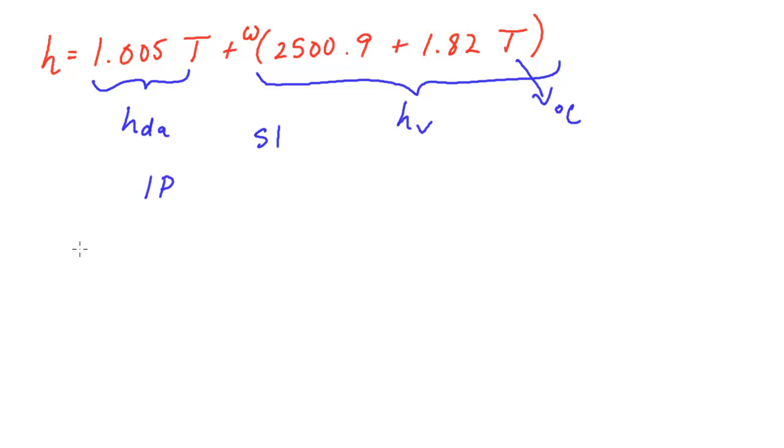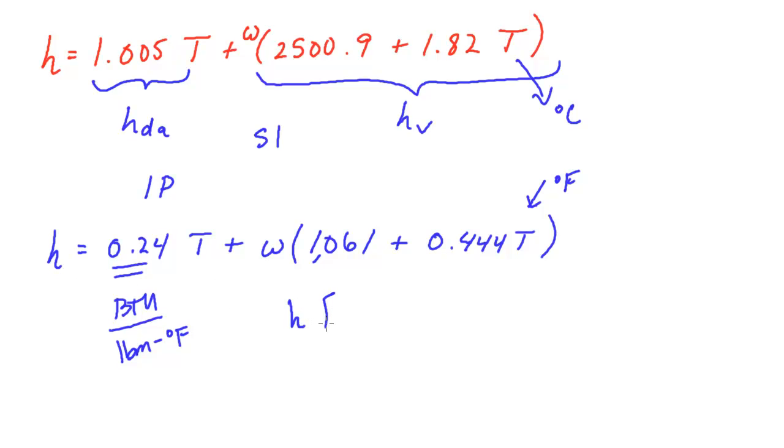And in IP, we have enthalpy is 0.24 times temperature, plus specific humidity ratio, times 1061, plus 0.44 times temperature. These temperatures are in degrees Fahrenheit. These terms here would be in BTU per pound mass degrees F. And obviously, that leaves this enthalpy in units of BTU per pound mass.